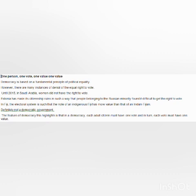Another feature of democracy is one person, one vote, one value. Democracy is based on a fundamental principle of political equality. However, there are many examples of denial of this equal right to vote. For example, until 2015 in Saudi Arabia, women did not have the right to vote. Estonia made its citizenship rules such that people belonging to the Russian minority found it difficult to get the right to vote. In Fiji, the electoral system ensures that the vote of an indigenous Fijian has more value than that of an Indian Fijian.